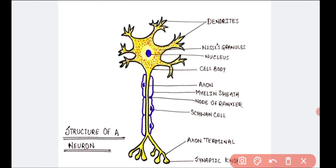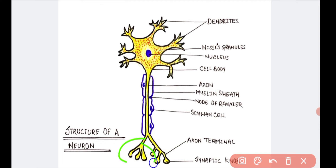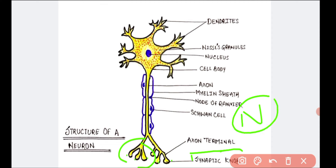Next is the axon. This long fiber you can see is called the axon. The distal end of this long fiber contains branch structures with a bulb-like structure at the end. These bulb-like structures are called the synaptic knob, and the synaptic knob contains synaptic vesicles which contain neurotransmitters that help in the transmission of impulse from one neuron to another — which we will cover in the next video.